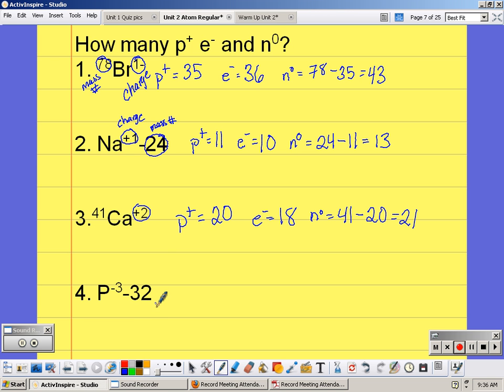Phosphorus is number 15 on the periodic table, so we have 15 protons. The negative 3 means I have to have 3 more negatives, so 15 would be 18 negatives. The neutrons, you take the mass number minus the protons, and we would have 17.